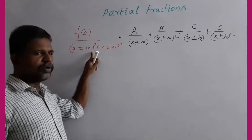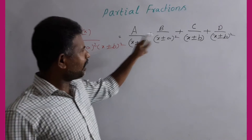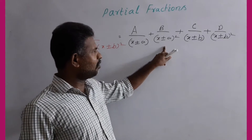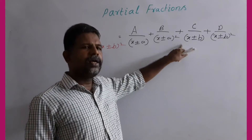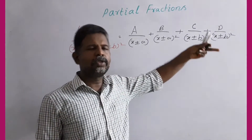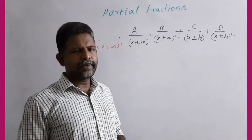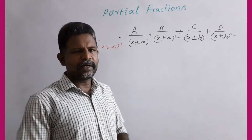In the case where we have a cube, the factors are (x + r − a), (x + r − a)², and (x + r − a)³ — this is the cube case expansion.